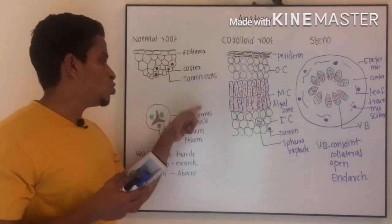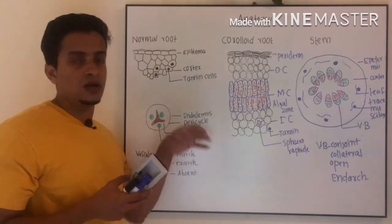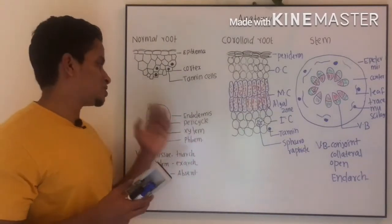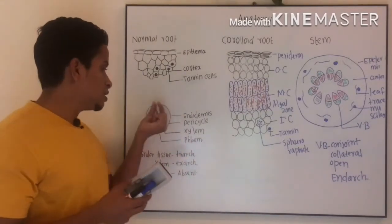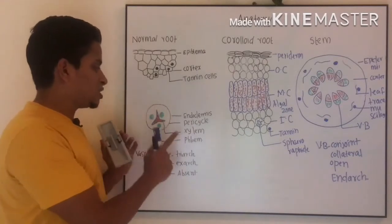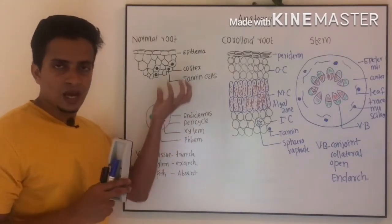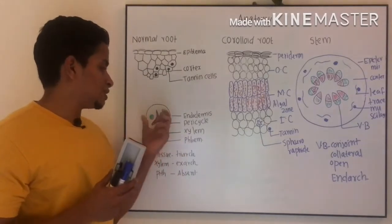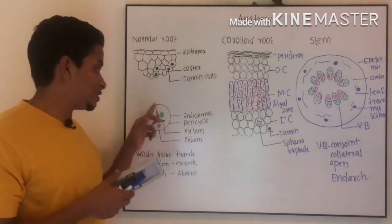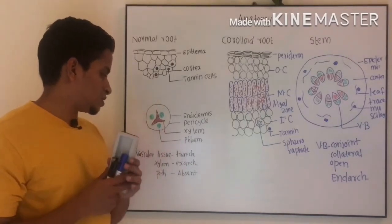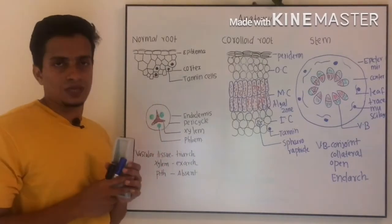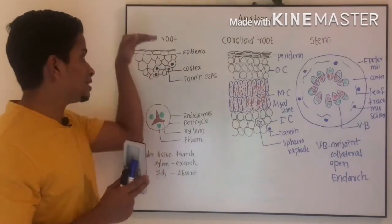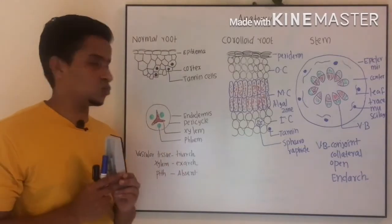Endodermis is followed by pericycle. Inner to the pericycle, you can see the arrangement of xylem and phloem. Xylem is in exarch condition because it is a root. Vascular tissue xylem, here it is represented as triarch. Triarch xylem is present and pith is absent. In between the xylem you can see phloem. So this is the internal anatomy of normal root.